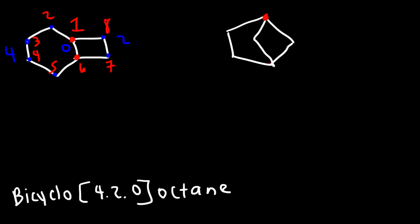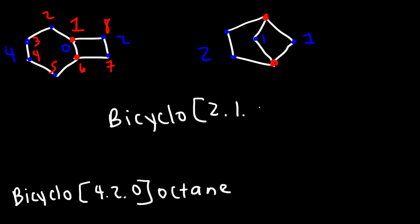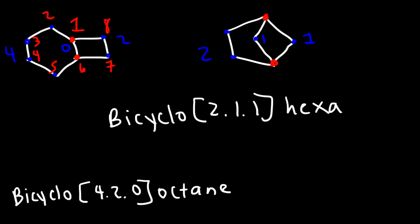Now for the next one, here are the bridgehead carbons. On this side there are two carbon atoms. In the middle there's one, and on the right side there's one. So that's going to be called bicyclo[2.1.1]. We have a total of four plus the two bridgehead carbons, so six — hexane. To number it, we're going to start with one, then go towards the longest link, then five, and then the one in the middle will be six.